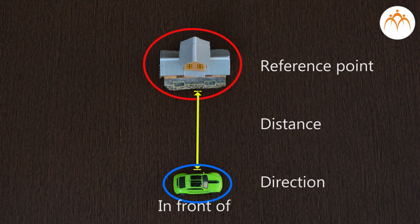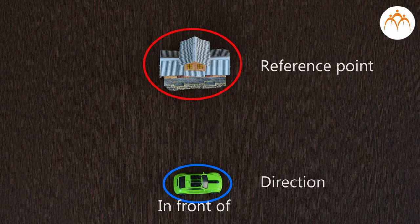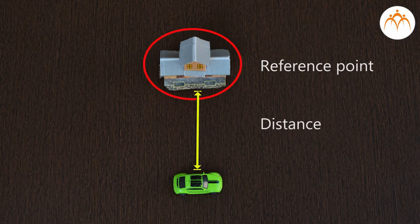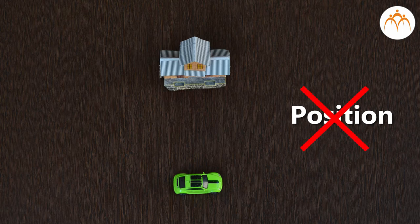If we leave out any of these three aspects of position — the reference point, the distance, and the direction from that reference point — we cannot describe its position.